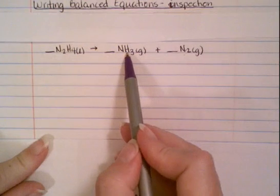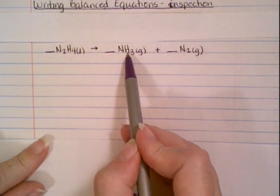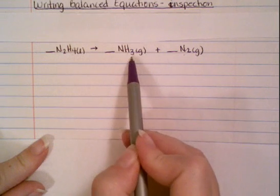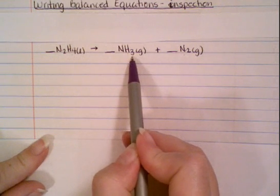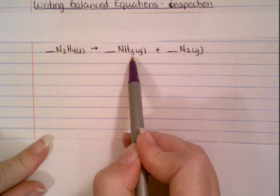So the only thing that's in this one without nitrogen is the hydrogen. So I have 4 on the left and 3 on the right. What is the least common multiple of 4 and 3? It's 12.